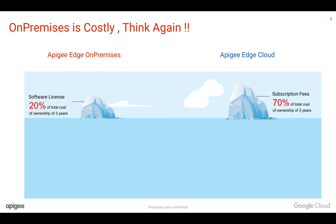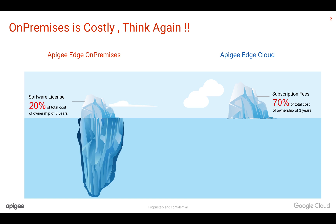But what lies beneath the water is something different when it comes to on-premises, and the total cost will be more than the cloud. The hidden costs involved in Apigee on-premises are huge compared to Apigee Edge cloud.